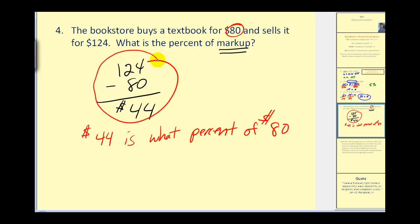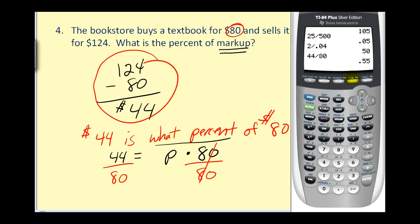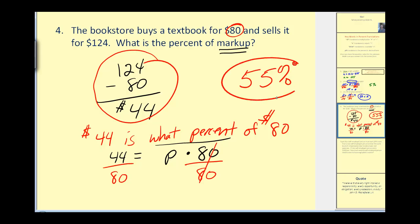We translate this into an equation: 44 equals p times 80. We divide by 80 to solve for p — I use p to remind me I'm looking for a percentage. So 44 divided by 80, then convert to a percentage by multiplying by 100, which gives us fifty-five percent. That is our markup.